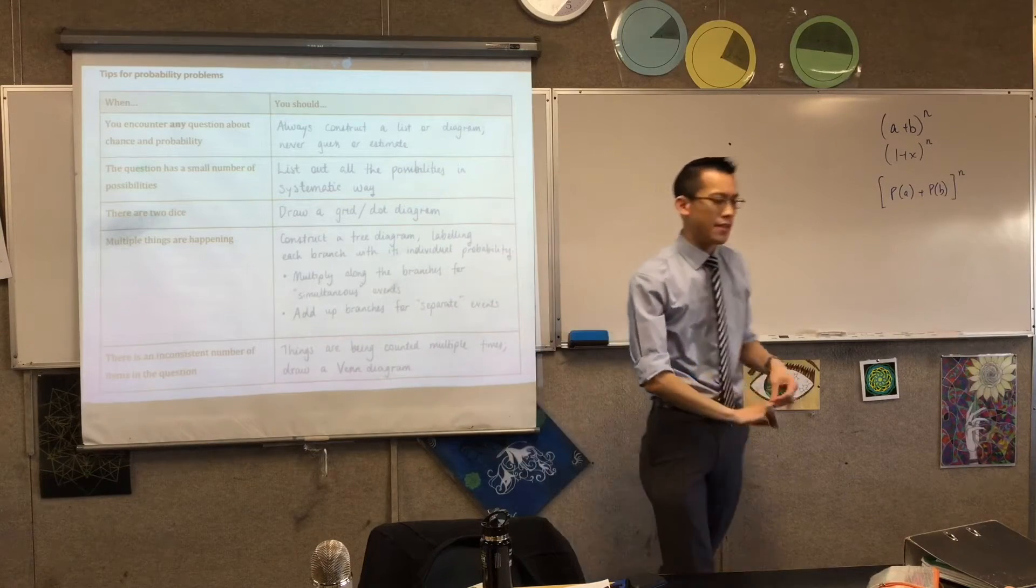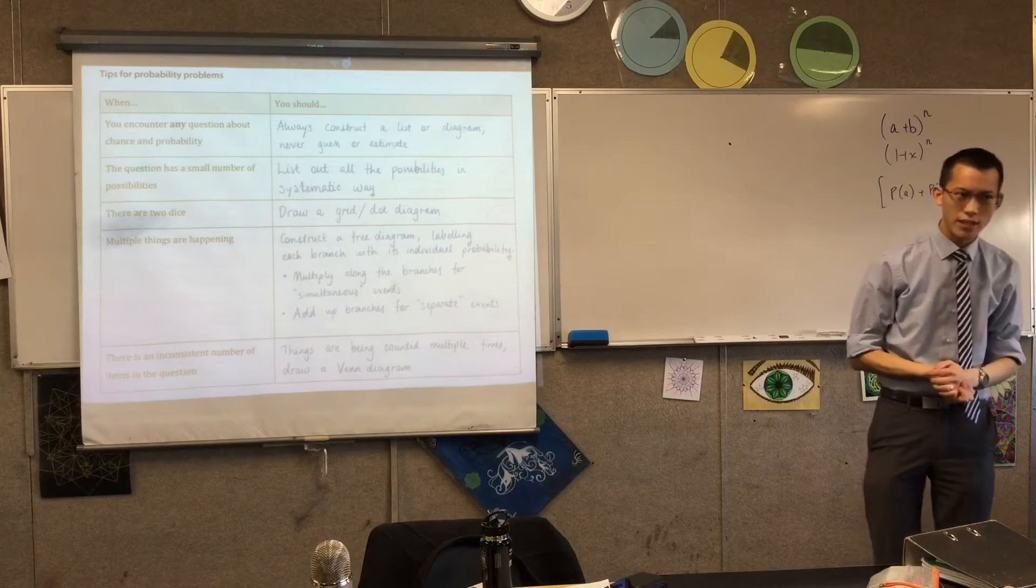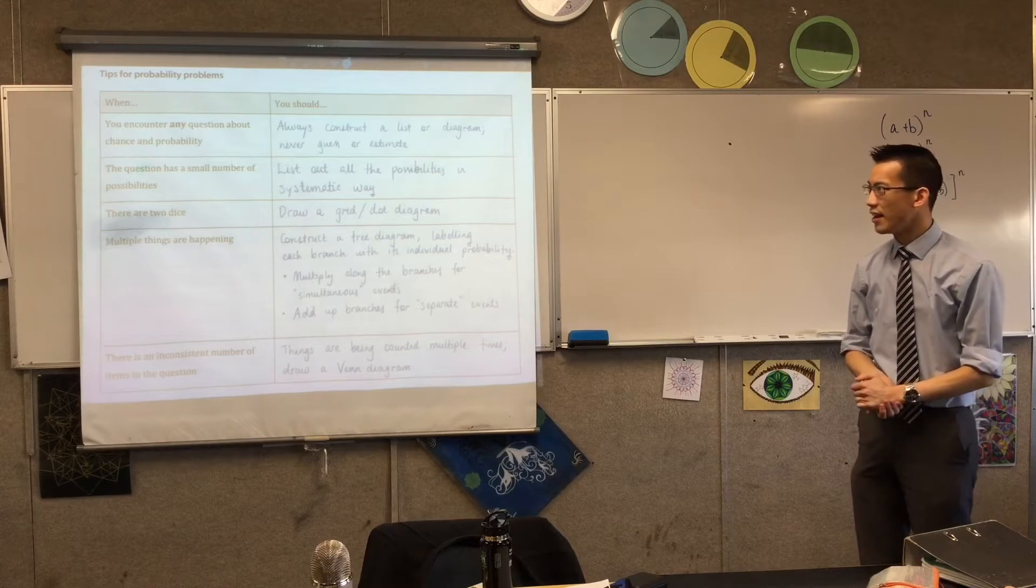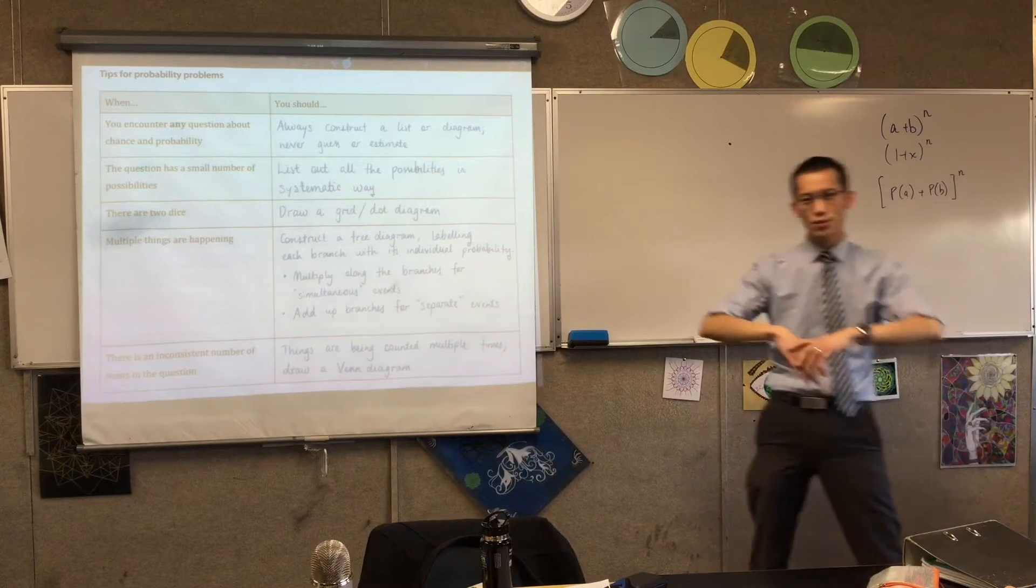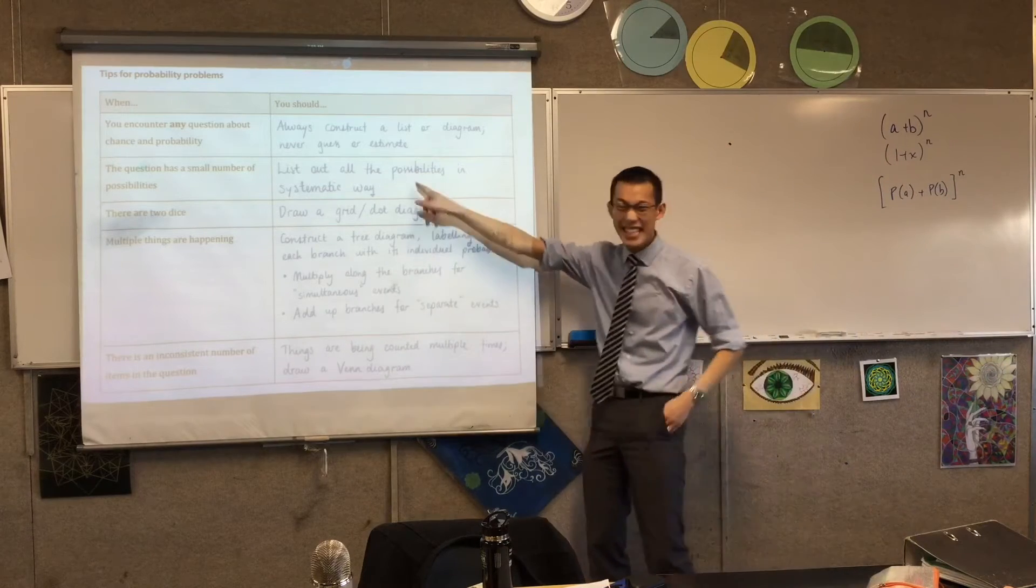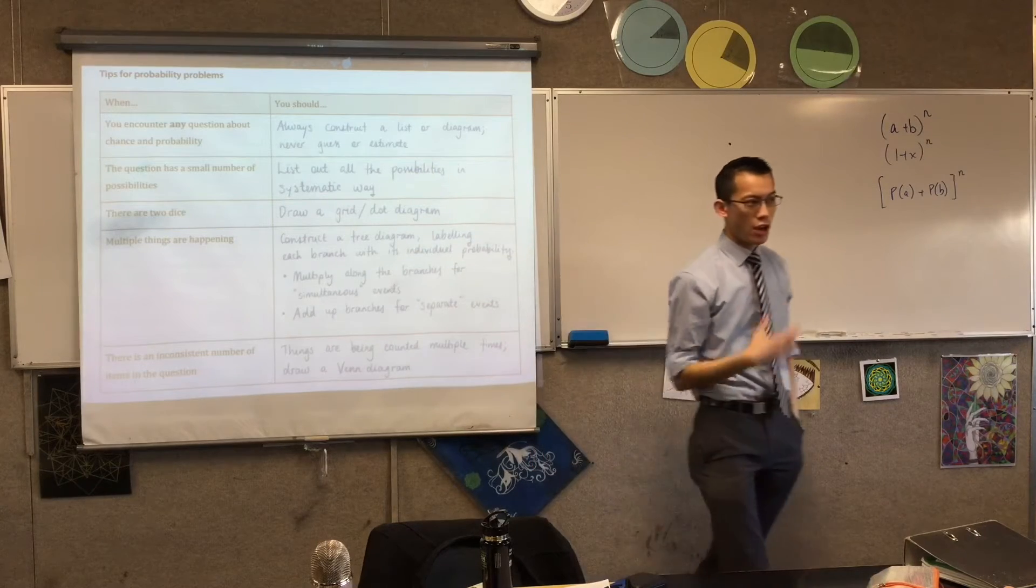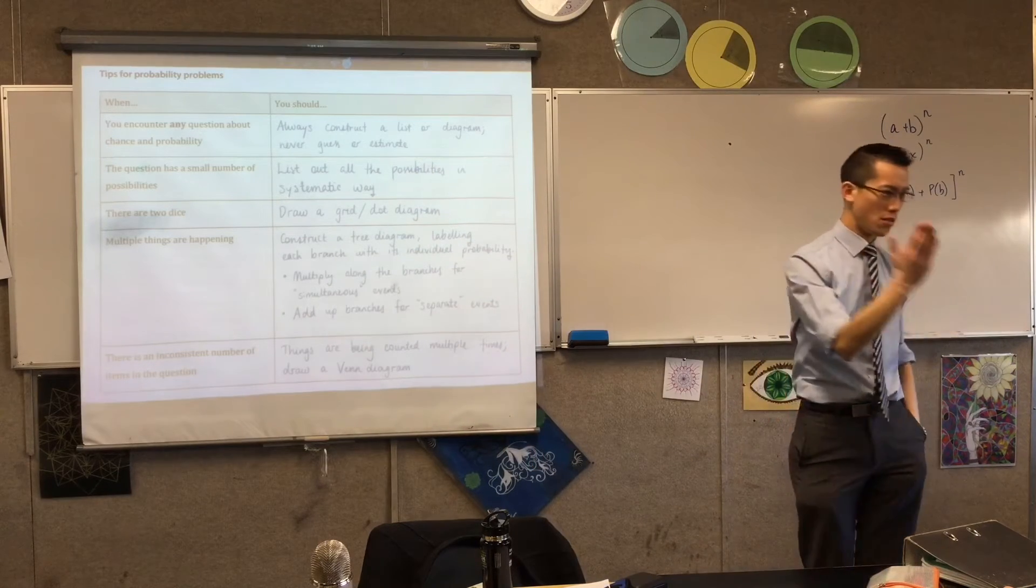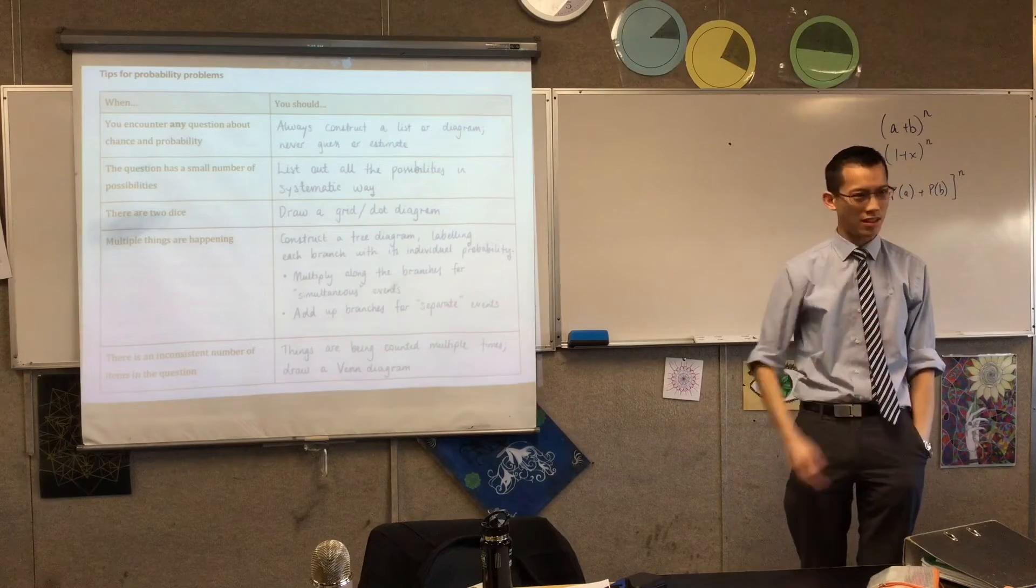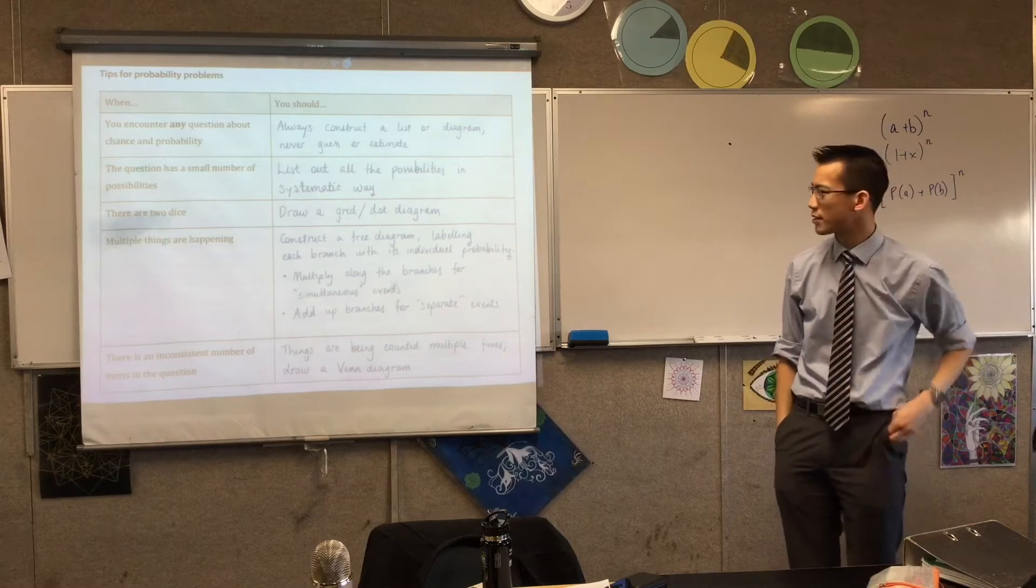If you see a question with only a small number of possibilities, like six or twelve, sometimes the simplest way is to just list the things out. Don't do some huge diagram. Some questions will say, show that there are six ways to do this. All they mean is, can you list what the six ways are? They will only ask for a list of that kind if there's going to be a small list.